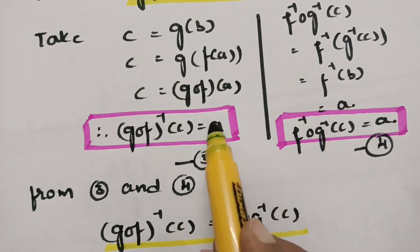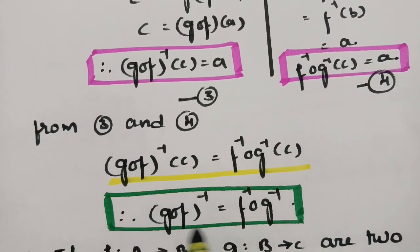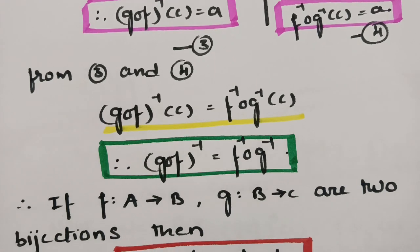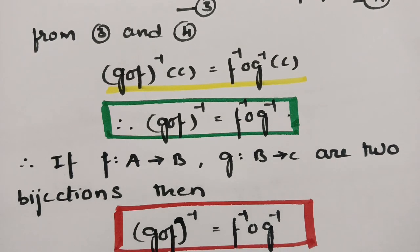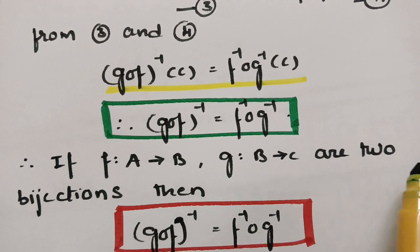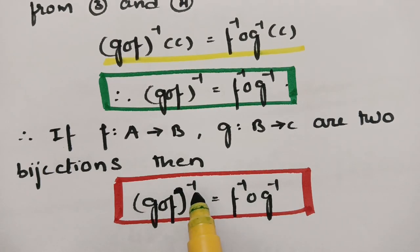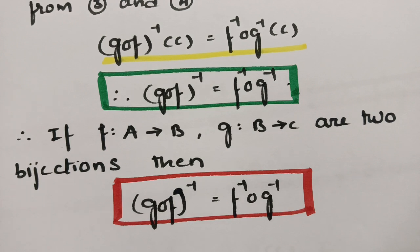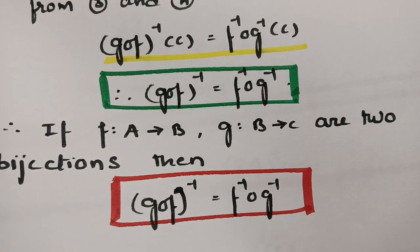From steps 3 and 4, both sides equal a, so we have proved that G circle F whole inverse equals F inverse circle G inverse. This is what was asked: if F maps from A to B and G maps from B to C are two bijections, then G circle F whole inverse equals F inverse circle G inverse.